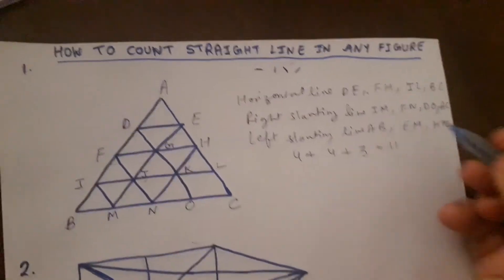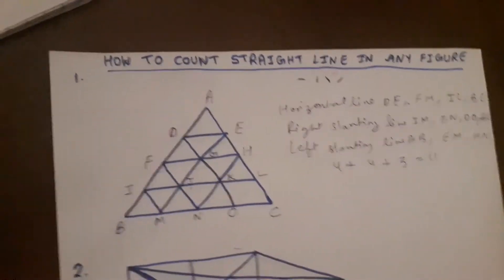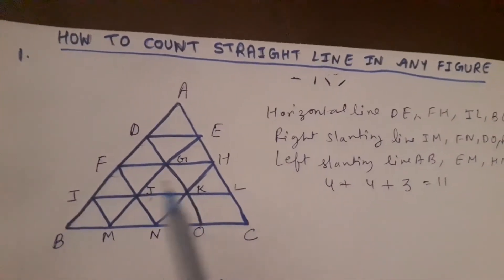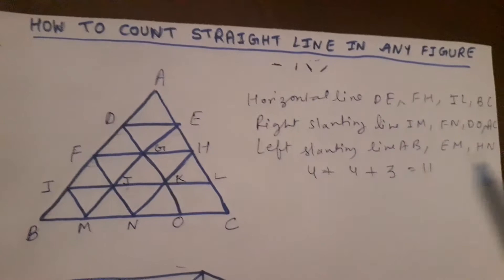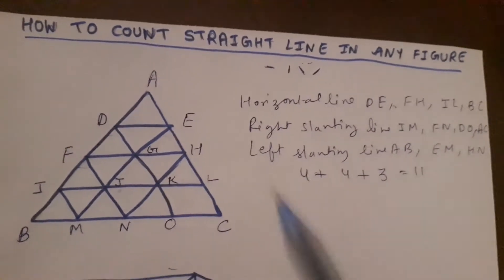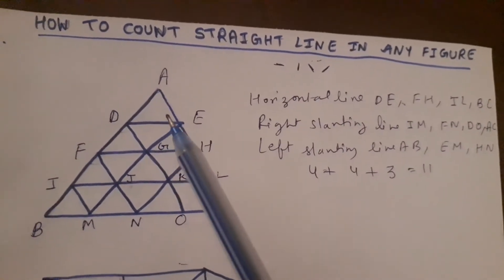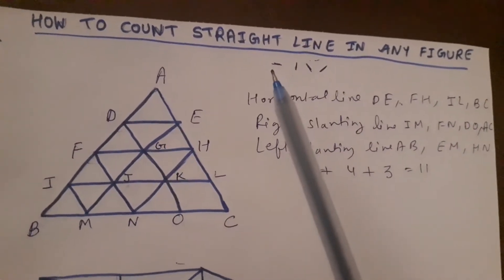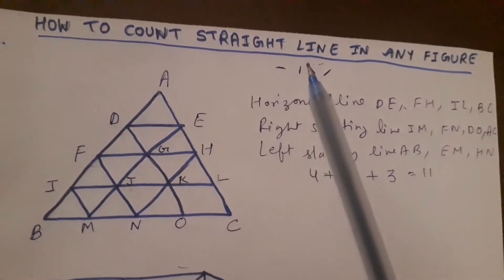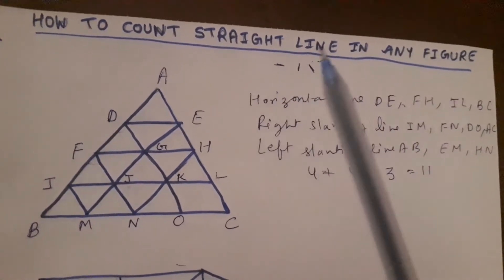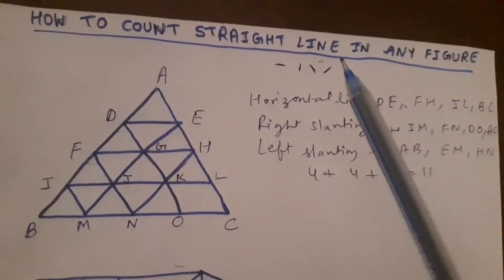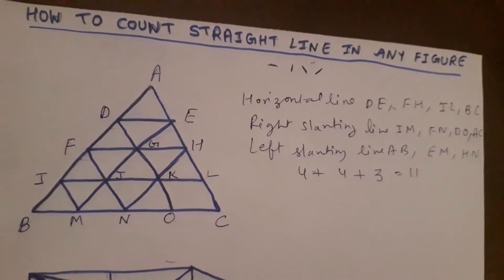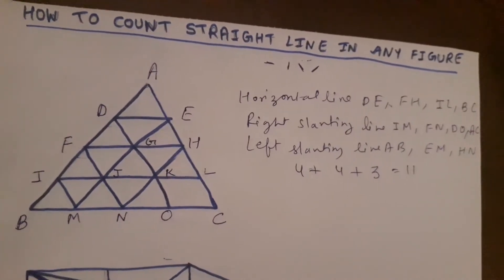So there are a total of 11 straight lines in this given figure. This is the first step: first label the figure, then count horizontal lines, then vertical lines, then left slanting lines, then right slanting lines. Let's move to the next figure.